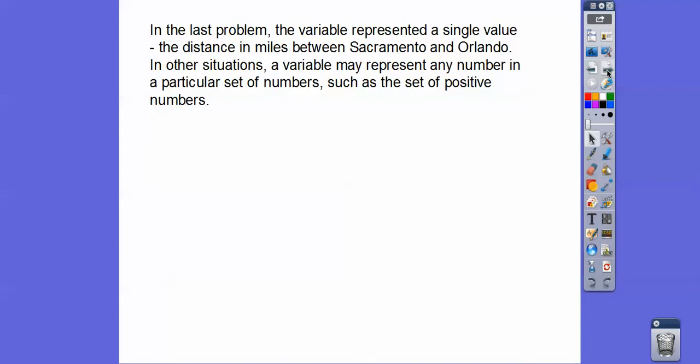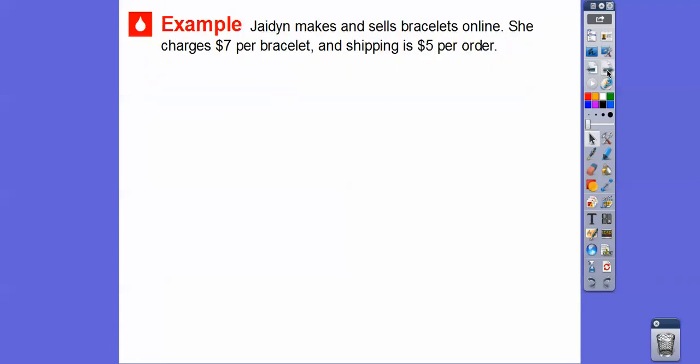In the last problem, the variable represented a single value — the distance in miles between Sacramento and Orlando. In other situations, a variable may represent any number from a particular set of numbers. For example, in the next problem, it's going to represent the set of positive numbers.